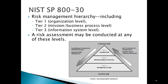Here we have a diagram showing this hierarchy — at the bottom are the information systems, at the top is the organization. You want to be able to relate risks at one level to risks at another level and make decisions at Tier 1 that impact Tier 2 and Tier 3 in a predictable manner based on the risk assessment. You can perform a risk analysis at any one of these levels, but ultimately the levels have to tie together.